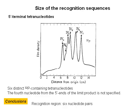Finally, they analyzed the size of the recognition sequence. Endonuclease R limit product labeled at the 5' termini with P32 was digested with DNase, and the tertiary nucleotide fraction was analyzed by electrophoresis. Six distinct P32-containing tertiary nucleotides were observed, indicating that the fourth nucleotide from the 5' ends of the limit product is not specified. The conclusion is the recognition region is six nucleotide pairs.